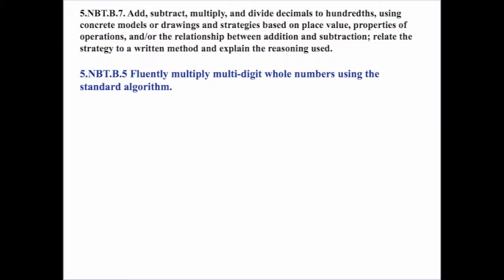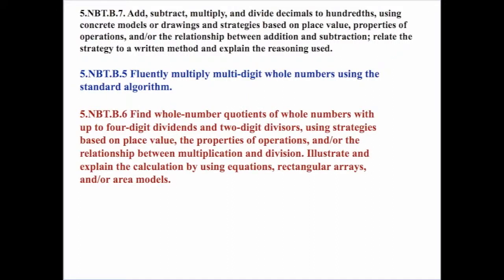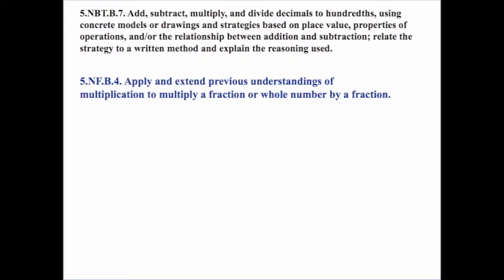It's important to see what other standards this connects to, but we really need to understand what types of numbers are allowed — what are our limitations as far as the numbers we can use here. Standard 5.NBT.B.5 deals with multiplying multi-digit whole numbers using the standard algorithm, so whole numbers are pretty much fair game. Standard 5.NBT.B.6 talks about whole number quotients with up to four-digit dividends and two-digit divisors, so two-digit divisors would be our maximum.